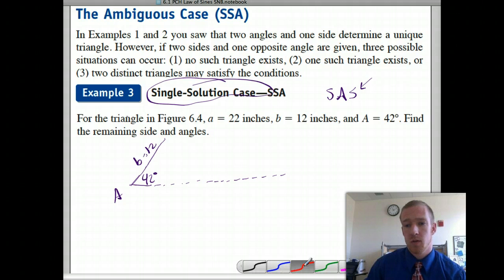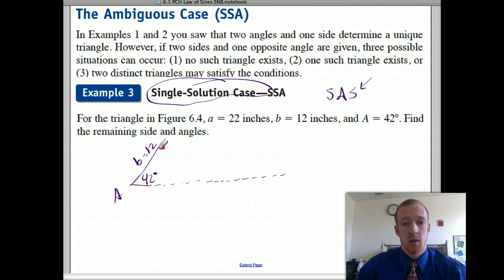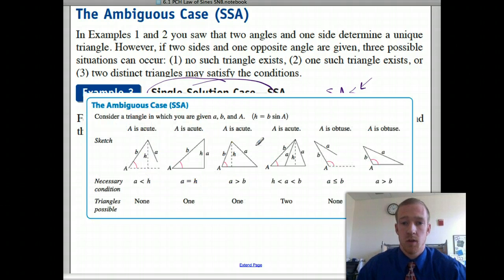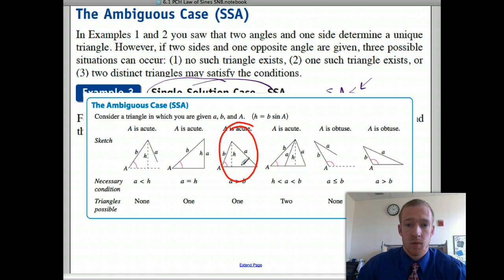Because this is 22, there's no way for us to get a 22 inch side and have an acute angle here. So it has to be an obtuse angle. So A is 22. So we have to have an obtuse angle. That's like this case here, where side A is greater than our B. Alright, so there's one solution.